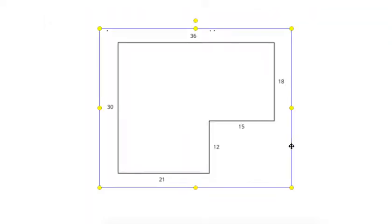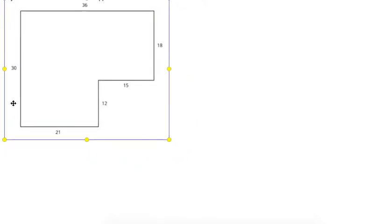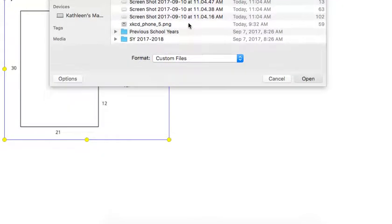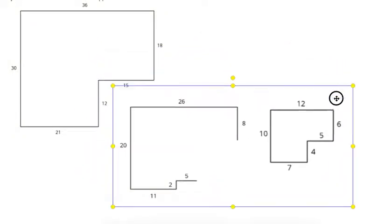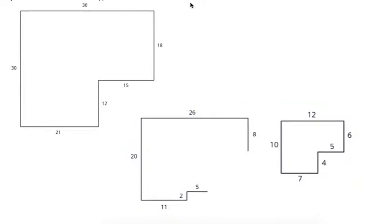We have an original, and we have two potential scale copies. So, let's mark our original. And we have copy one, and we have copy two. So what happened in each of these? Do they both look like they're scale copies of the original?